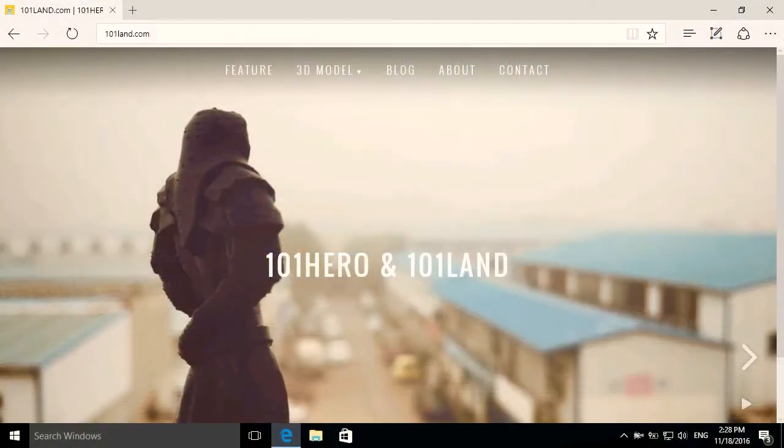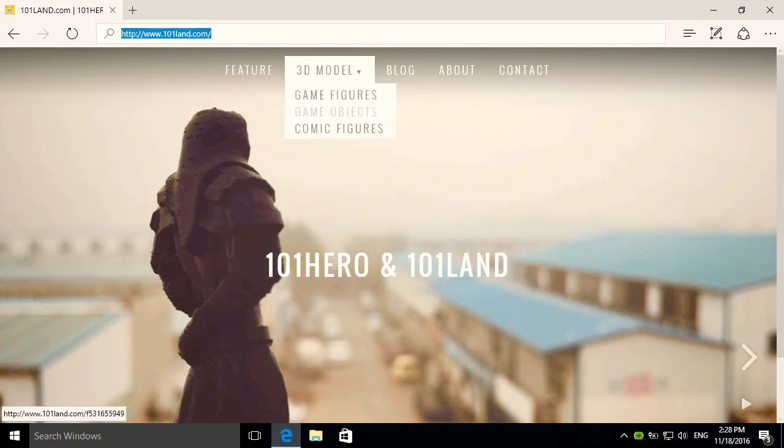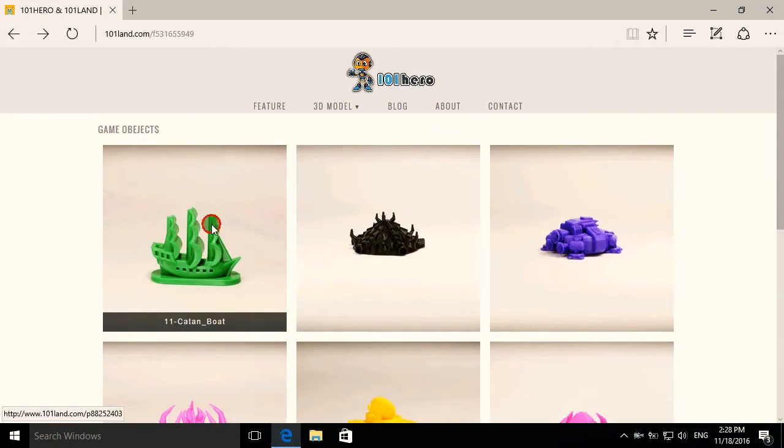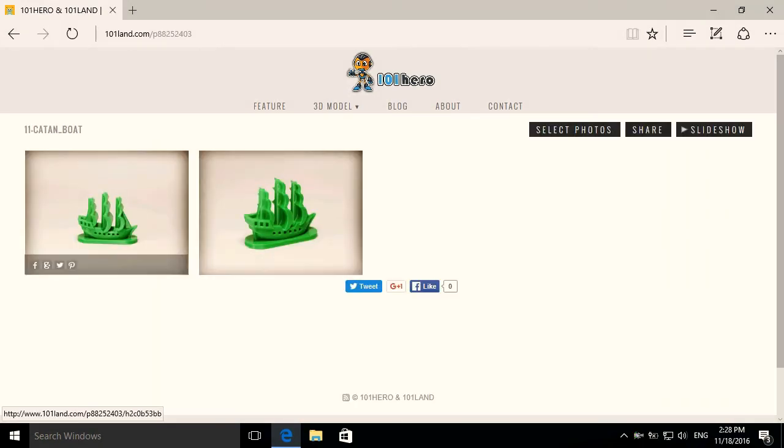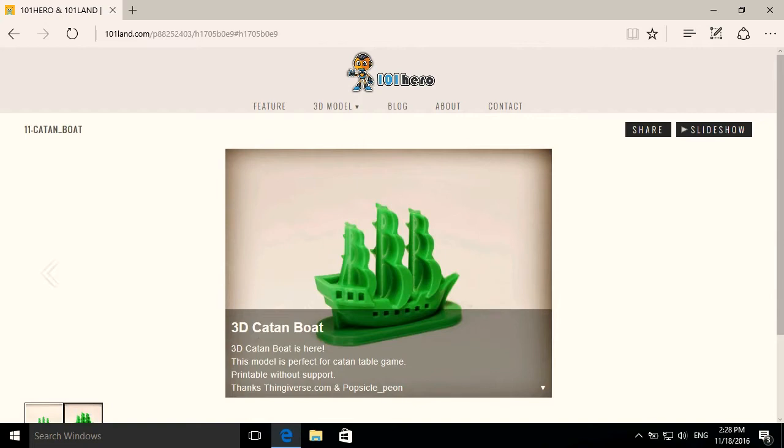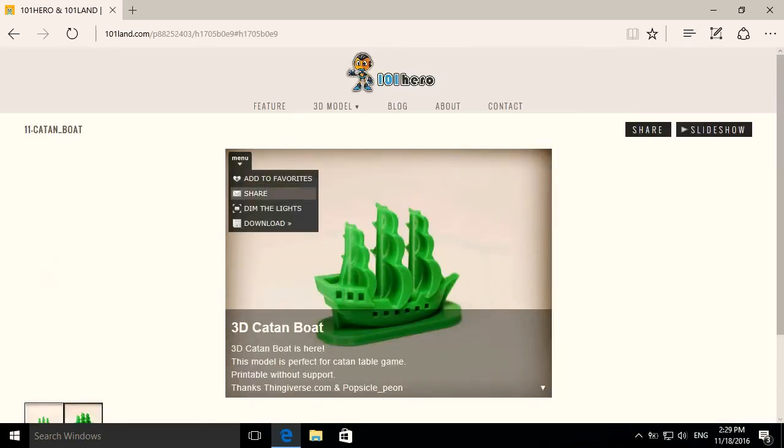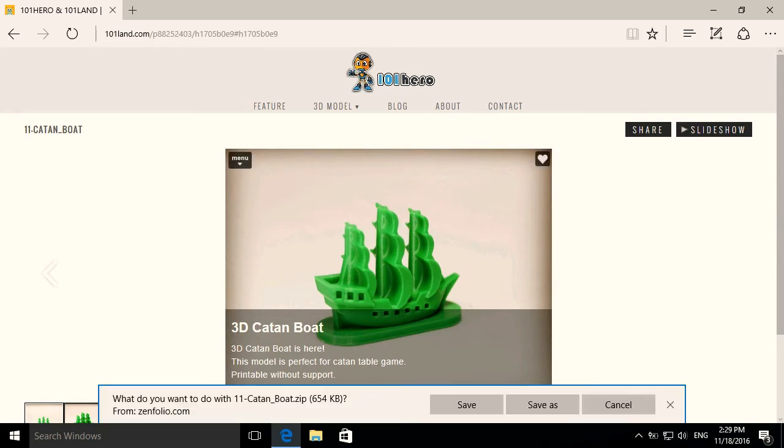Please login to our website www.101land.com. Then choose the 3D model and click on game objects. Choose your favorite picture. If we click on the boat, two pictures will appear. If we choose this 3D boat, you can click here to add it to your favorite. Then continue to download this object. Click on download and click on all available original.